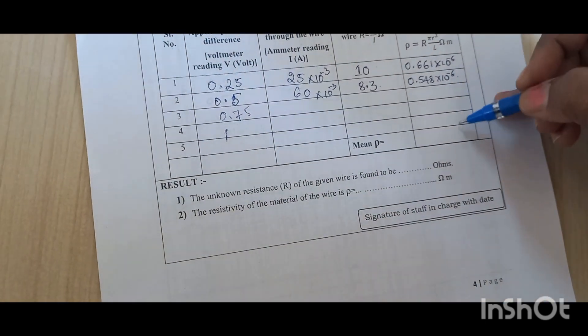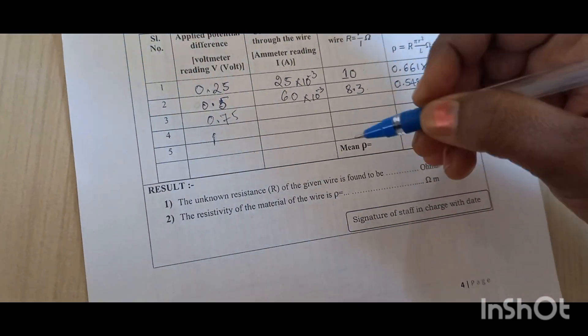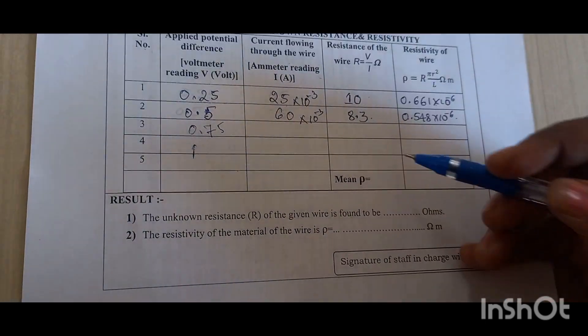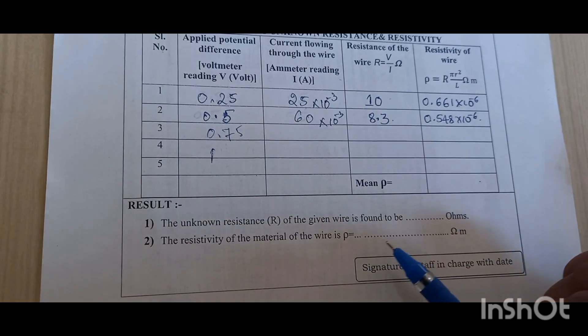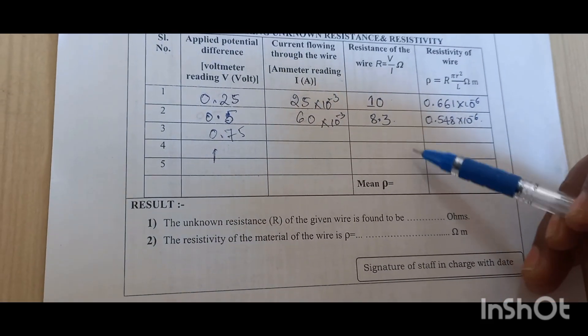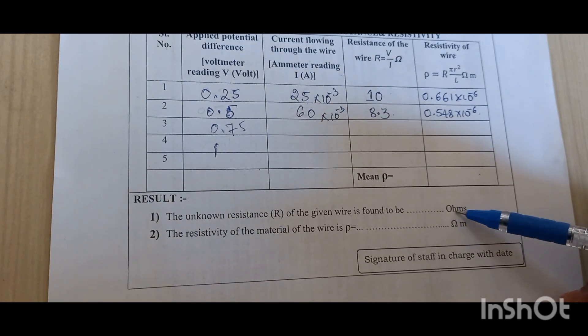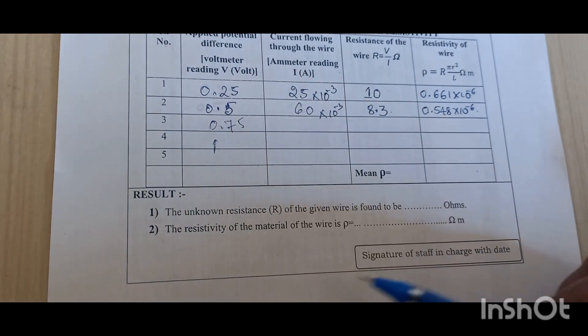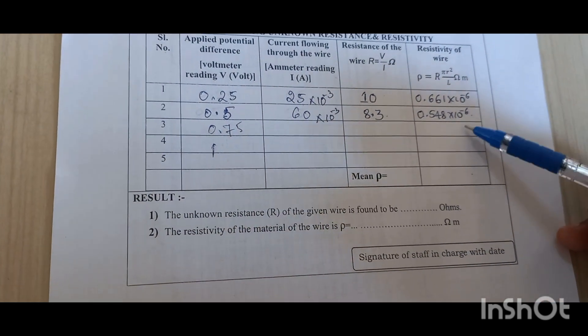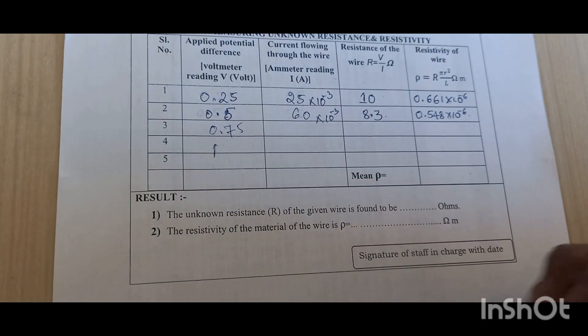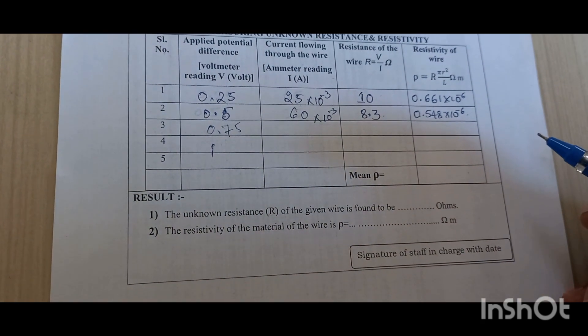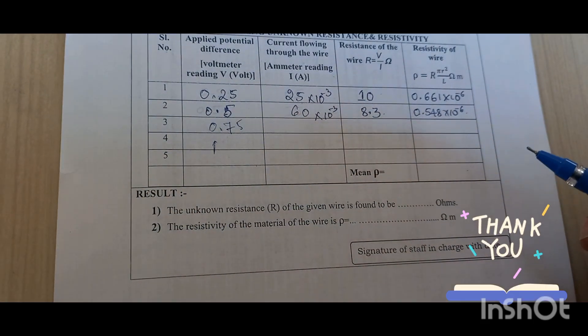Like this you can take the mean of the resistivity values. In the result, the unknown resistance R of the given wire, we should take the mean value of R and write in the result. The second is take the mean value of resistivity and write in the result correspondingly. This is the resistivity experiment. Thank you for watching.